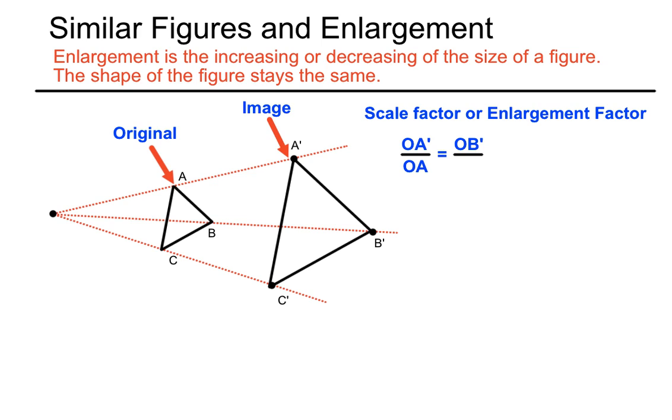OB dash, that distance, is twice as much as the distance OB. And remember that center of enlargement is the O in this case. OC dash is twice as long as OC. So they're sort of stating those distances as ratios, and I guess it's a 2 to 1 ratio or a 2 over 1 scale factor.